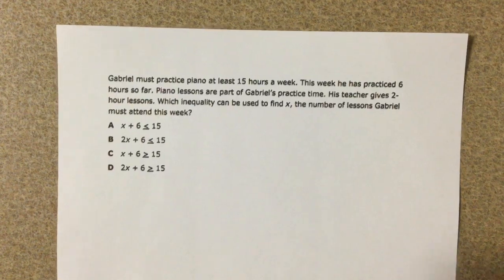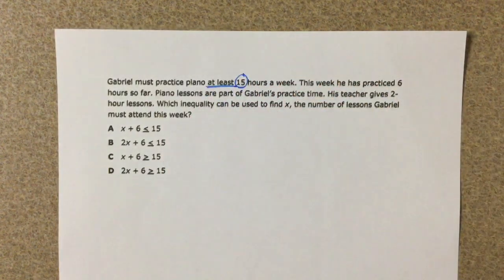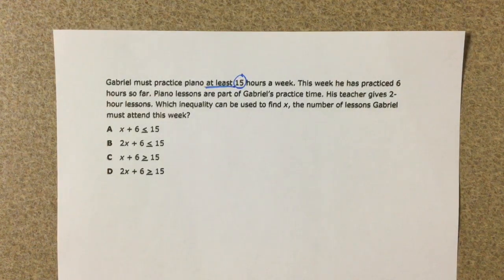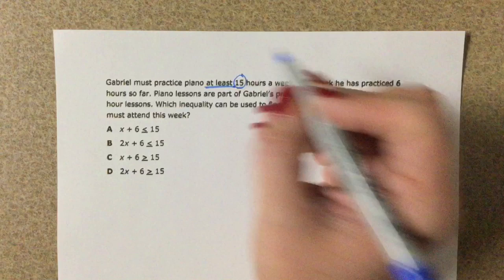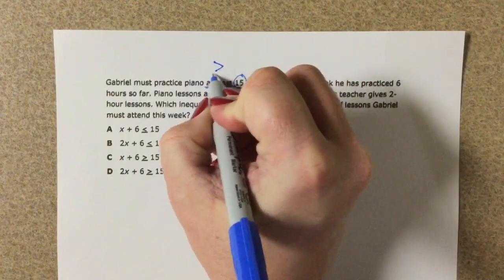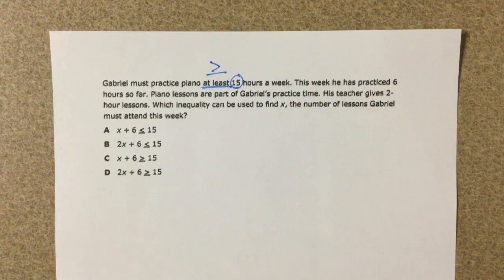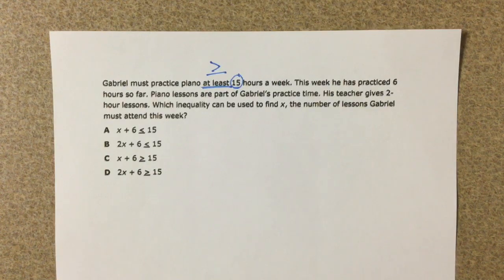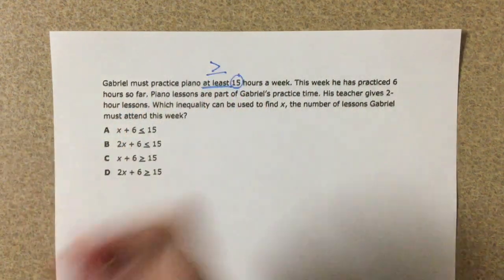So he must practice at least 15 hours. And that 'at least' is the one where it's the opposite of what it kind of sounds like. This is going to be the greater than or equal to. This is like riding the rides at Six Flags and you have to be at least 42 inches. So you have to be greater than 42 inches.